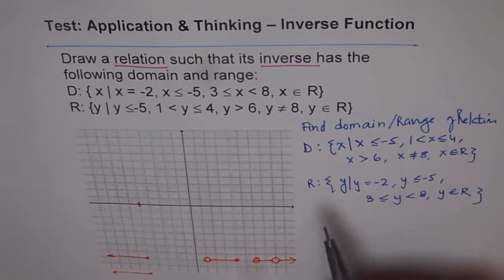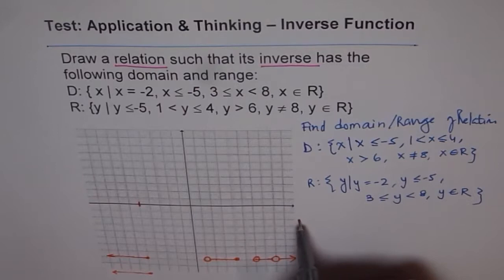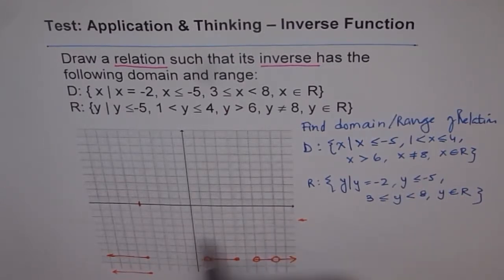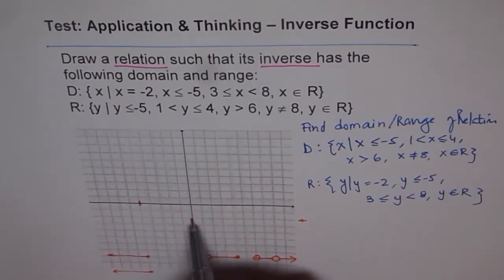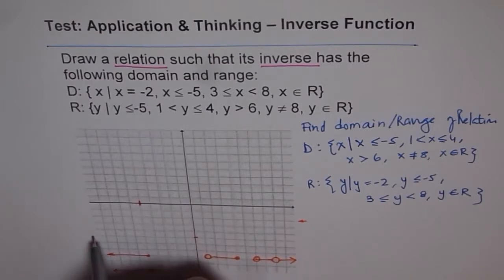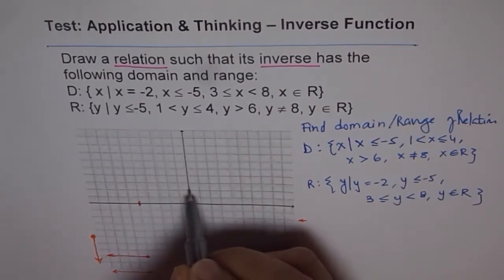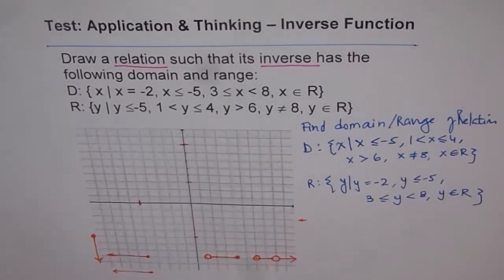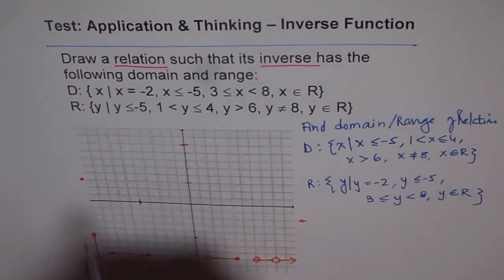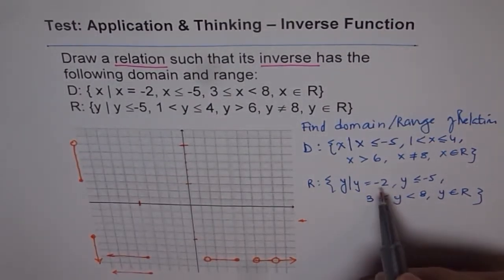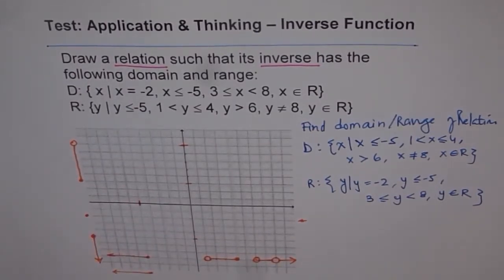For the range: y equals minus 2, so we need a point somewhere there. Then y less than or equal to minus 5 — we mark minus 5 and include it along with everything below. Then y is between 3 and 8 including 3, but not including 8 — so we include 3 with a solid dot and place a hole at 8. Plus we have the isolated point at minus 2.